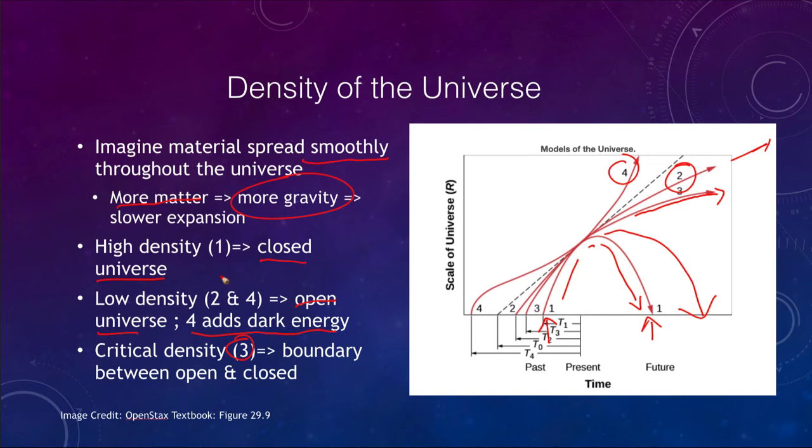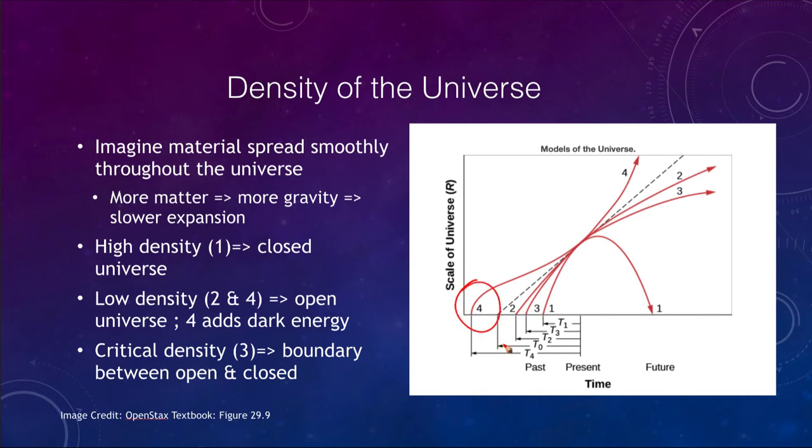One thing we see in this chart is that it also tells us the age. The times from T1, T2, T3, and T4 tell us how old the universe is. Based on the models, model four gives us an older age for the universe, and model one gives us a much younger age that the universe began a much shorter time ago. The age of the universe is also important and is tied to this density, how much material there is in the universe.